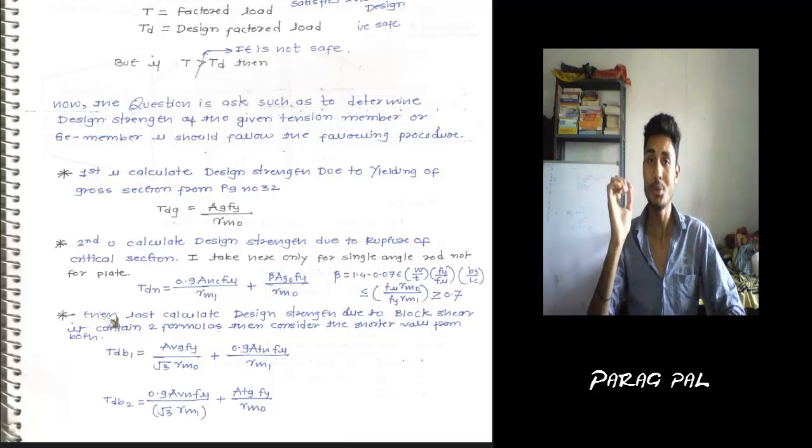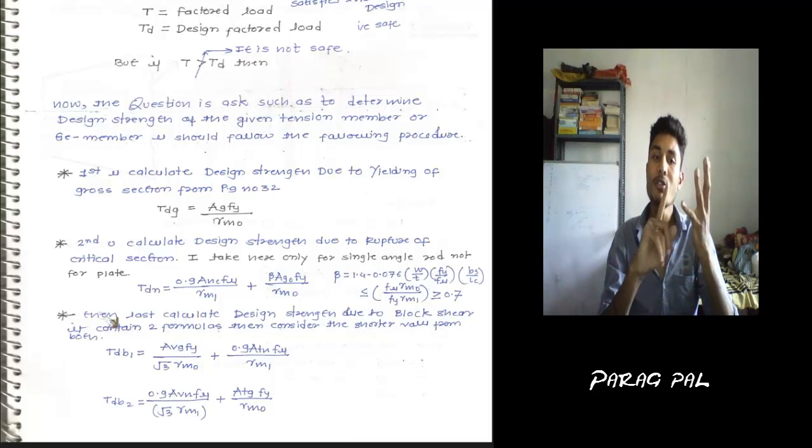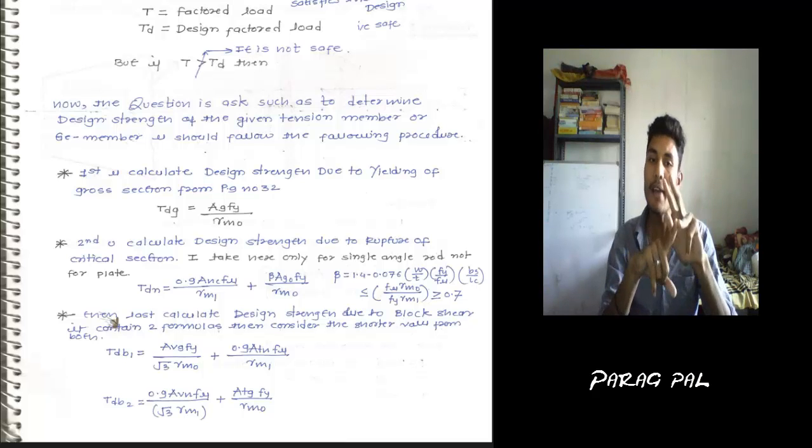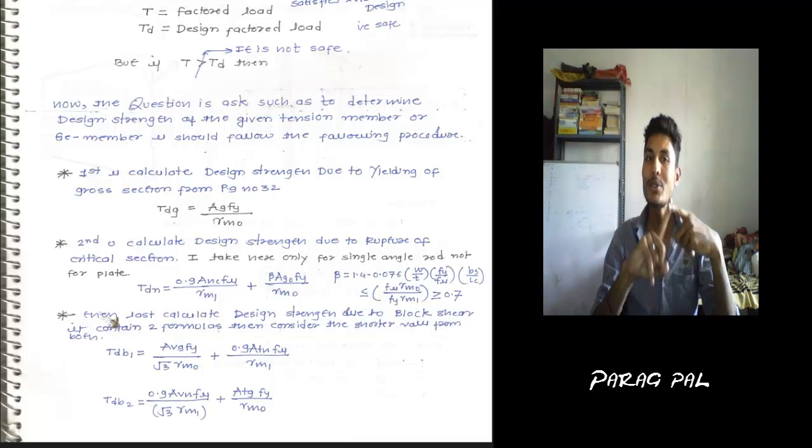My English is not so good, but I go through some action with this English. You have to be clear that if factored load is given in examination, or service load, working load, or safe load is given in examination, you have to multiply all these loads. Convert this load into a factored load by multiplying with 1.5 to get T, which is factored load.